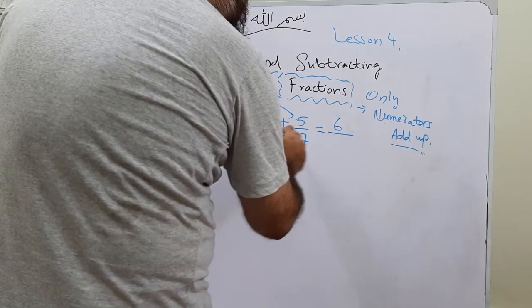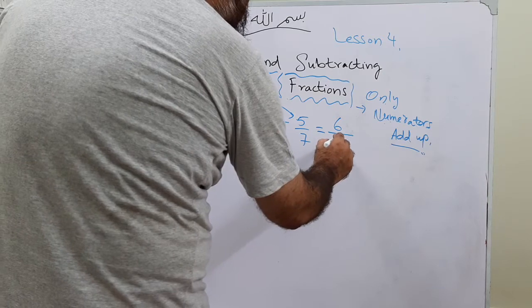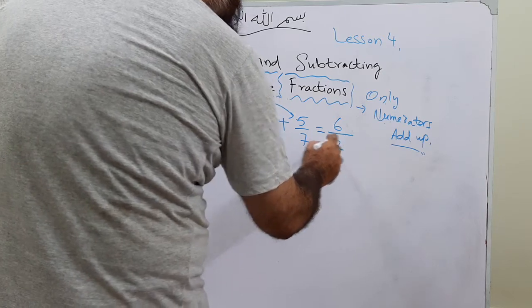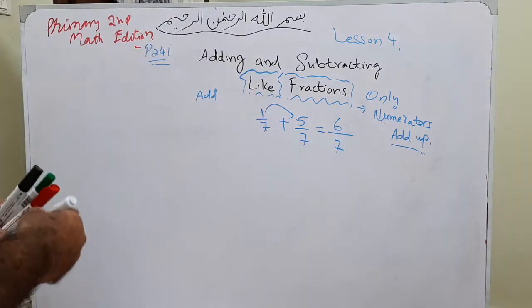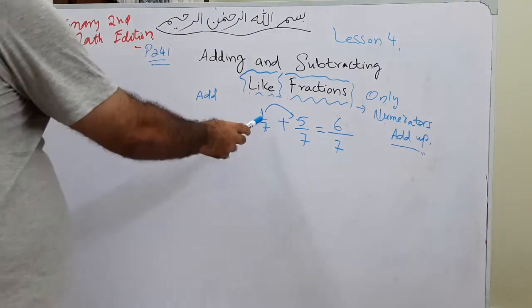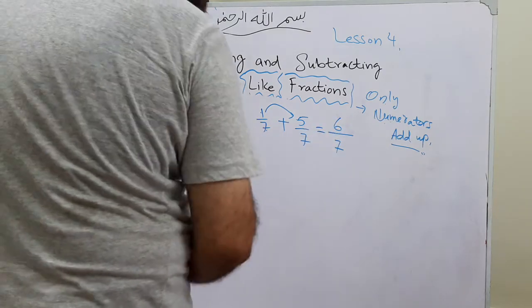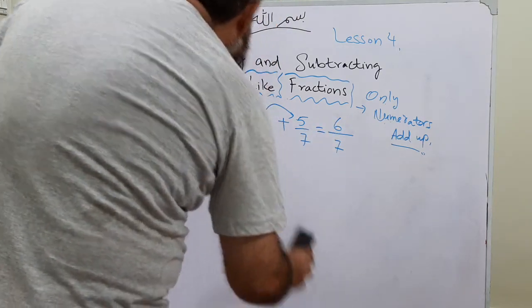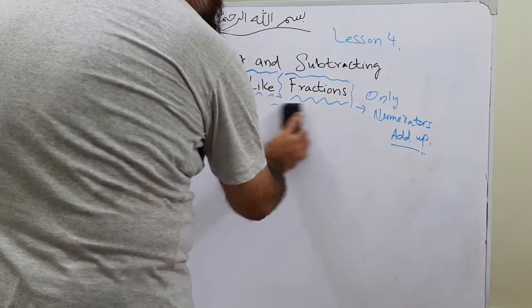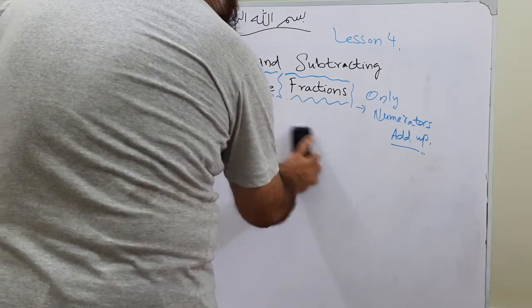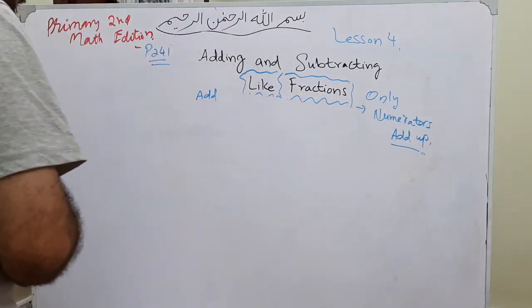The denominator 7 comes only one time, giving us 6 over 7. So when we add 1 over 7 and 5 over 7, we get the result 6 over 7. That was part b.